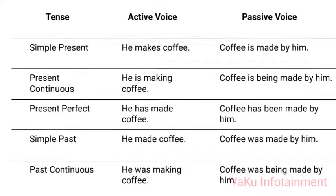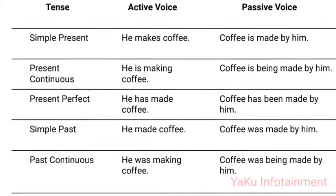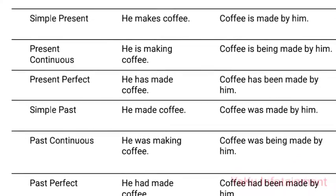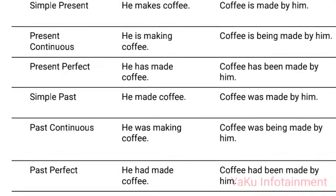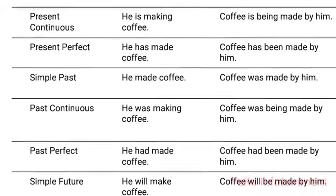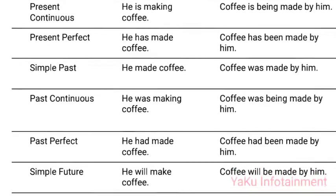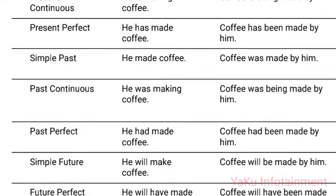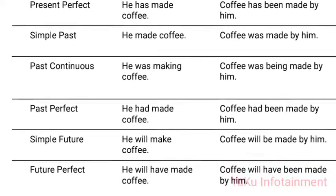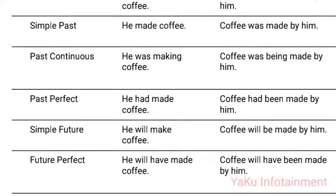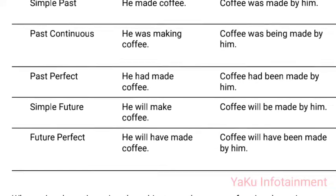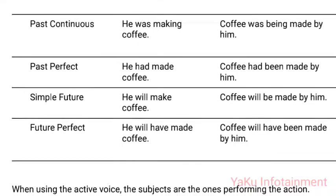Active to Passive Voice — Tense Changes: Simple Present: 'He makes coffee' → 'Coffee is made by him.' Present Continuous: 'He is making coffee' → 'Coffee is being made by him.' Present Perfect: 'He has made coffee' → 'Coffee has been made by him.' Simple Past: 'He made coffee' → 'Coffee was made by him.' Past Continuous: 'He was making coffee' → 'Coffee was being made by him.' Past Perfect: 'He had made coffee' → 'Coffee had been made by him.' Simple Future: 'He will make coffee' → 'Coffee will be made by him.' Future Perfect: 'He will have made coffee' → 'Coffee will have been made by him.'